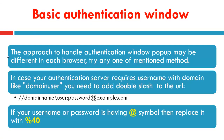These are the problems with the basic authentication window. The approach to handle the authentication window pop-up may be different in each browser, so try any one of the mentioned methods for each browser. In some situations, your authentication server requires a username with a domain name like domain\user. You need to add the double slash for that domain. If your username or password contains the at symbol, replace it with percentage 40, which is the ASCII encoding that the server will decode back to the at symbol.